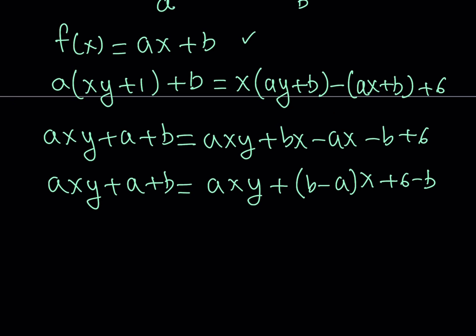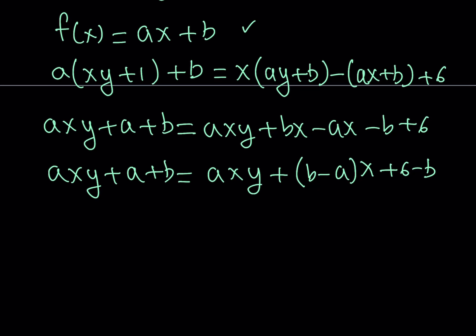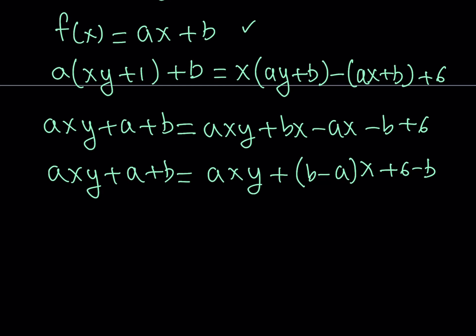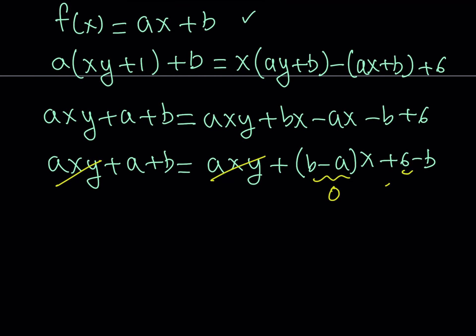Comparing both sides, since this equation is valid for all real values of x and y, we can compare coefficients. The axy terms cancel on both sides. On the right-hand side we have a linear term in x, but on the left-hand side we only have a constant, so the coefficient of x must equal 0, meaning b minus a equals 0. Then the remaining constants must be equal: a plus b equals 6 minus b.